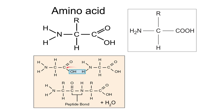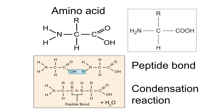Where those groups are lost, a bond forms between the carbon and the nitrogen. This bond is known as a peptide bond. So we have a condensation reaction leaving behind a peptide bond. You don't need to draw this, but you do need to be able to state that it's a condensation reaction and that a peptide bond is formed.